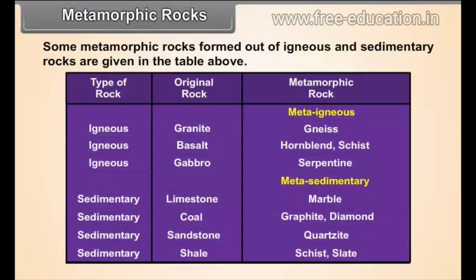The rock transformation table lists: Igneous rock granite forms metamorphic rock Gneiss; igneous rock basalt forms Hornblende; igneous rock gabru forms Serpentine. Sedimentary rock limestone forms metamorphic rock Marble; sedimentary rock coal forms Graphite and Diamond; sedimentary rock sandstone forms Quartzite; sedimentary rock shale forms Slate.